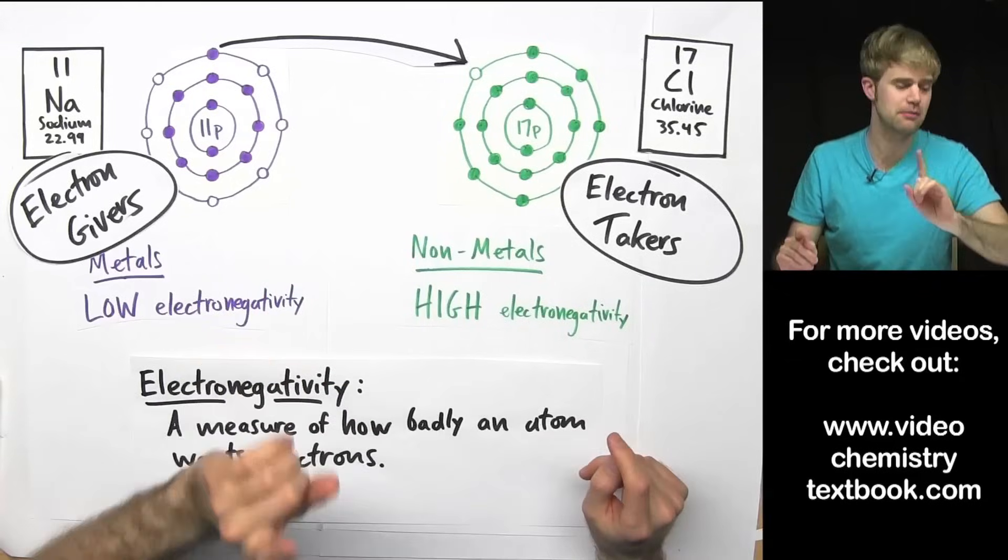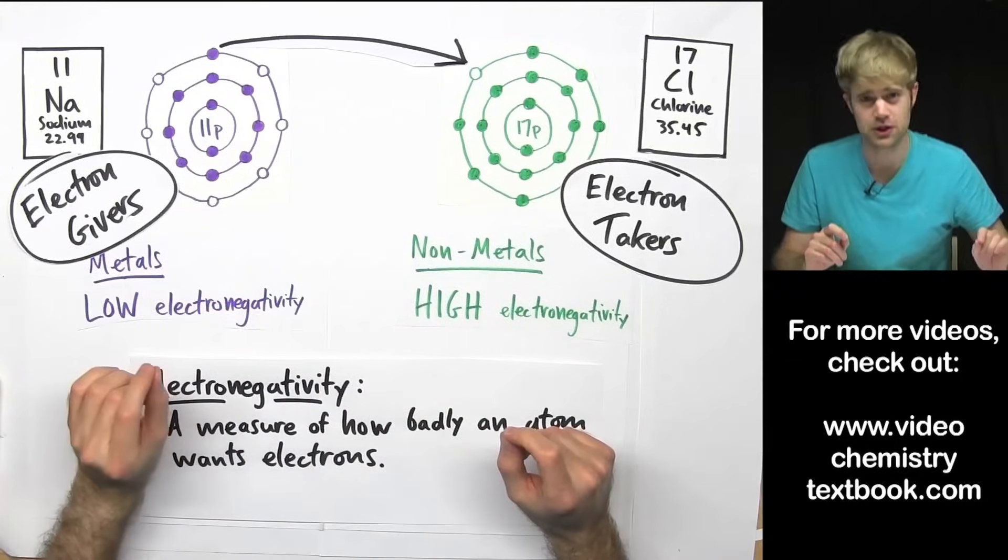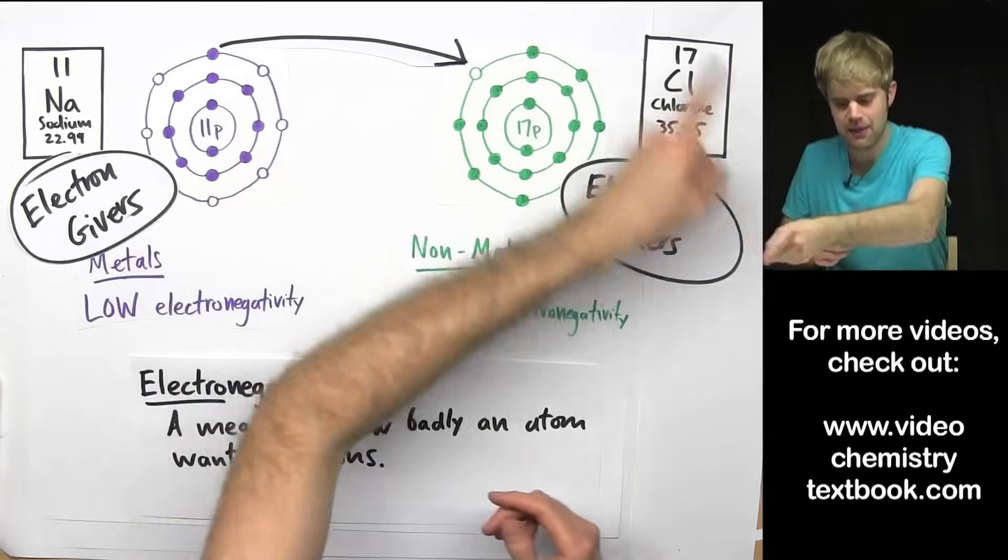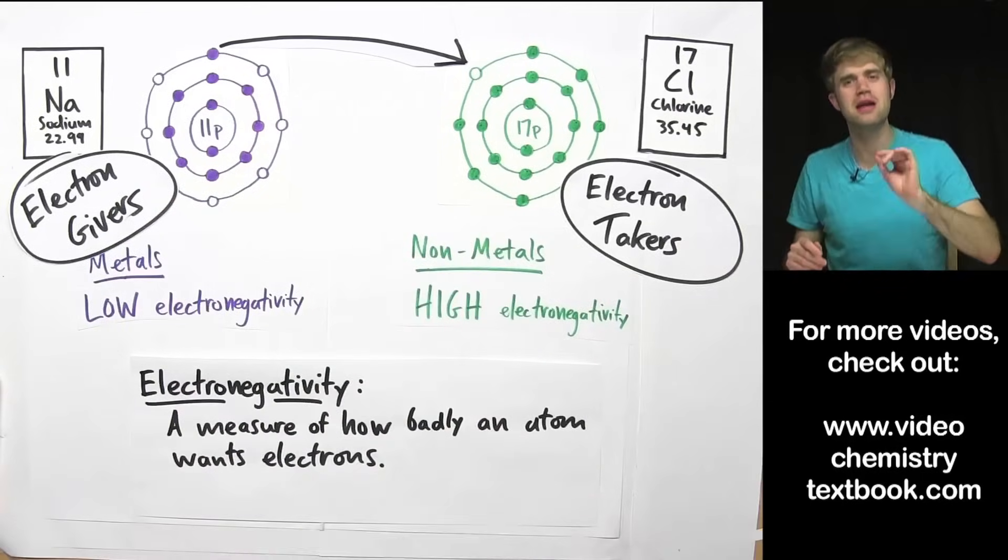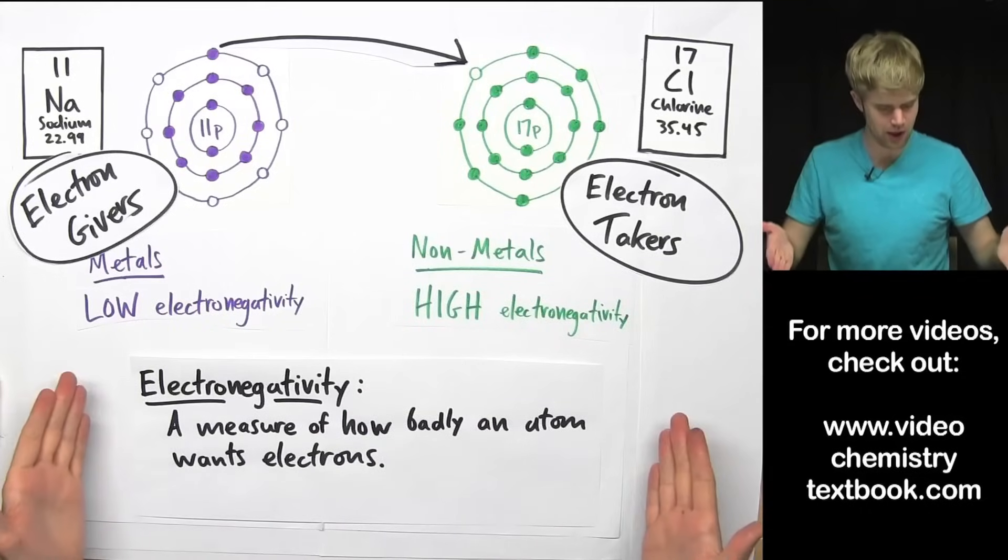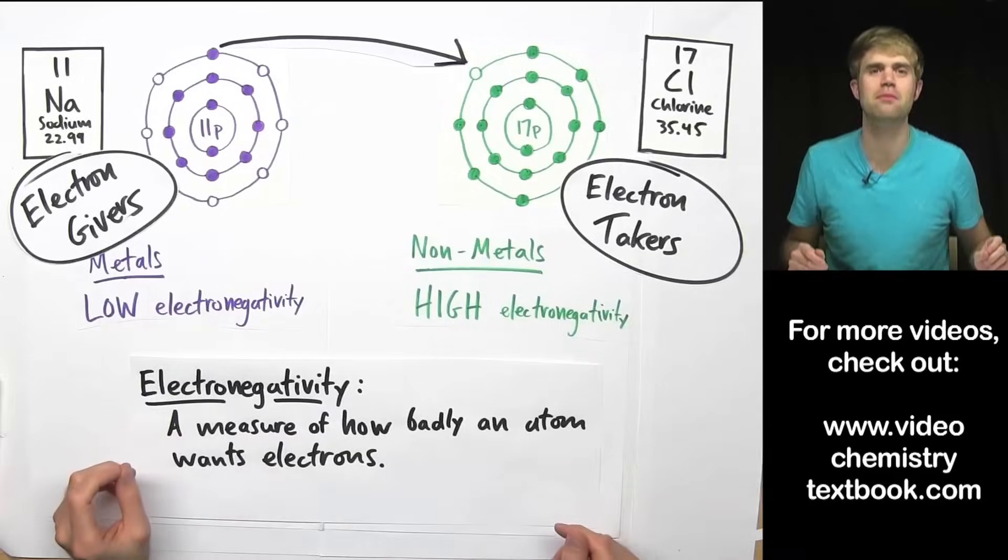And in ionic bonding because of that, the metals always become positively charged because they lose electrons and the nonmetals always become negatively charged because they gain electrons. It's all about electronegativity, the greediness of an atom for electrons.